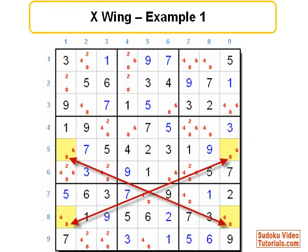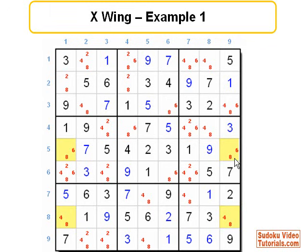Now, based on the X-Wing technique, if this cell is an 8, then across the row, this cell cannot be an 8. And down the column, this cell cannot be an 8. Therefore, if this cell is an 8, its opposite cell must be an 8.